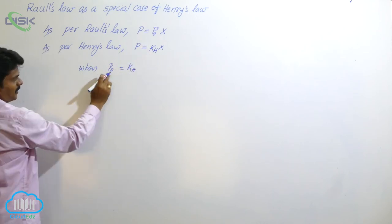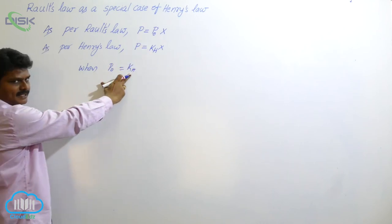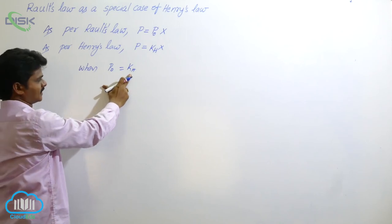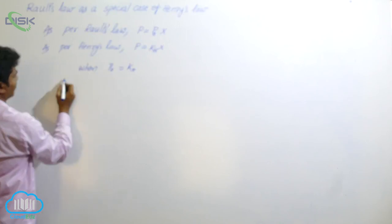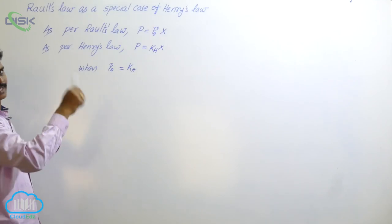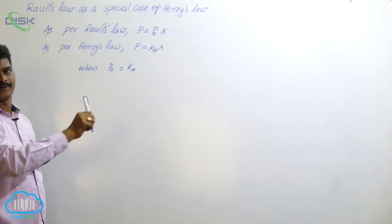p0 is the vapor pressure of pure solvent, kh is Henry's Law constant. When p0 equals kh, then Raoult's Law becomes a special case of Henry's Law.